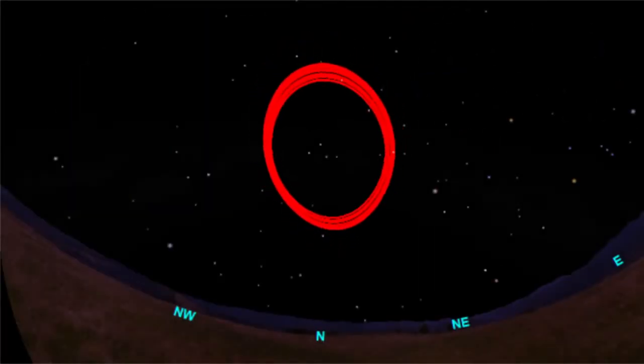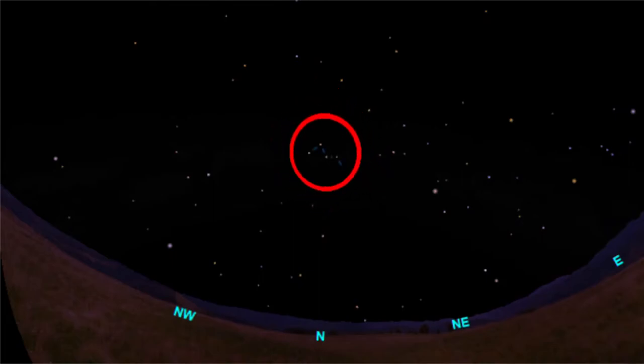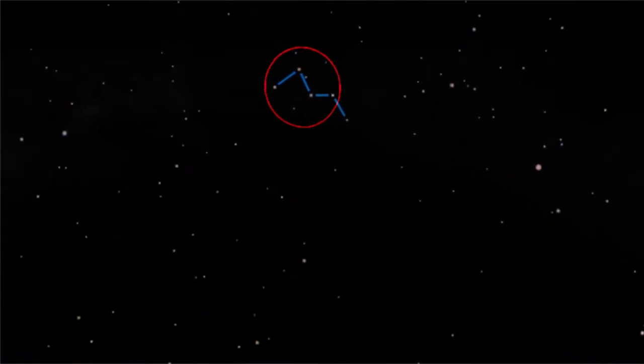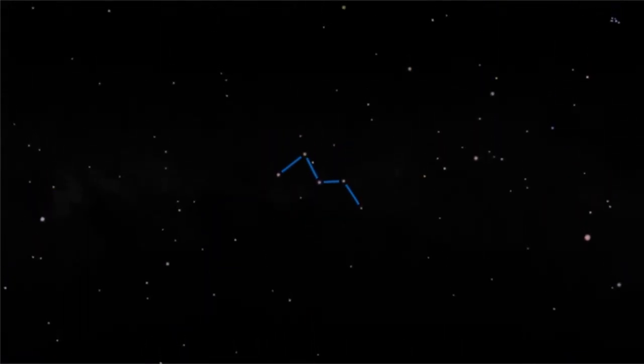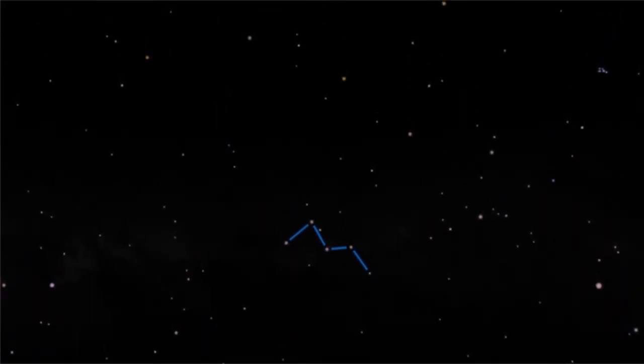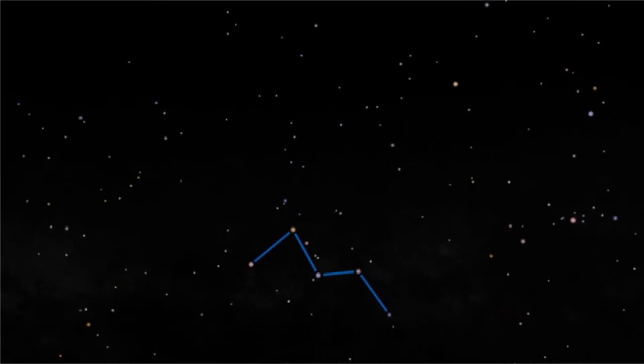To find the constellation Cassiopeia, look to the north for a collection of five stars. These five stars look to some like the capital M. Other people see a couple of slices in the sky.